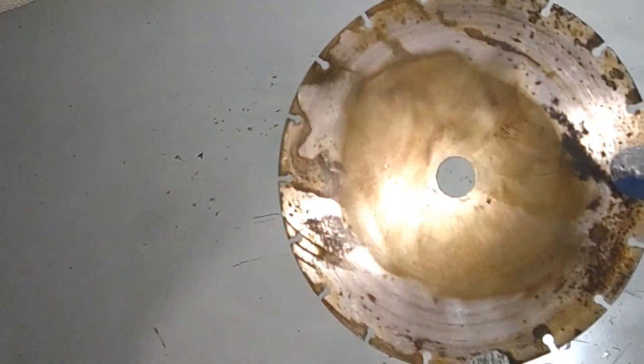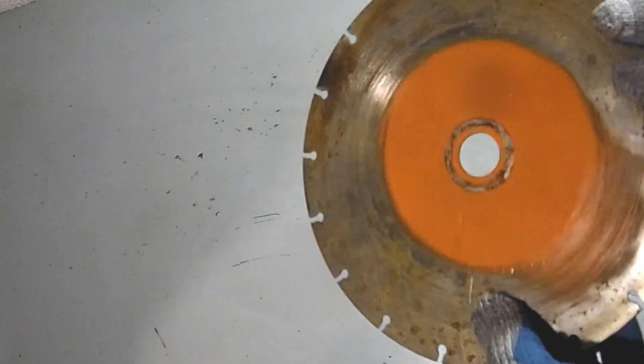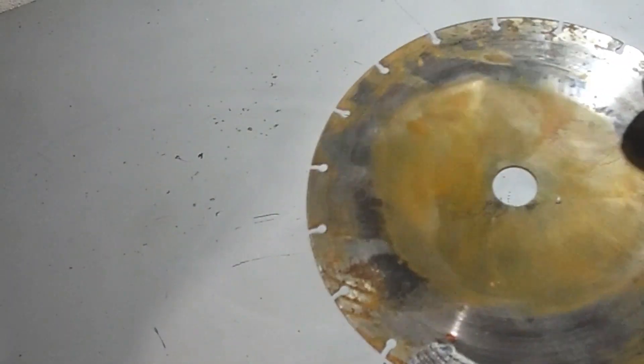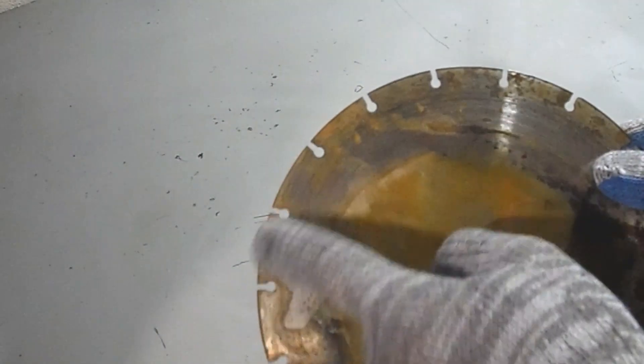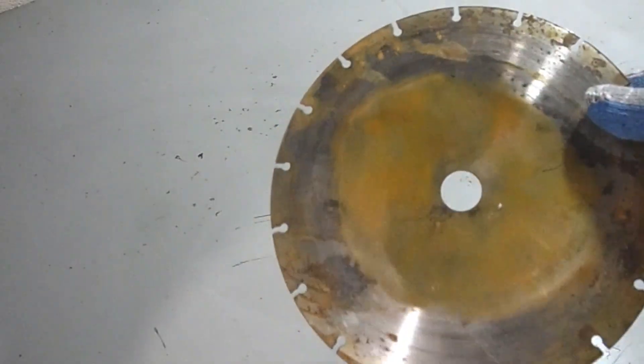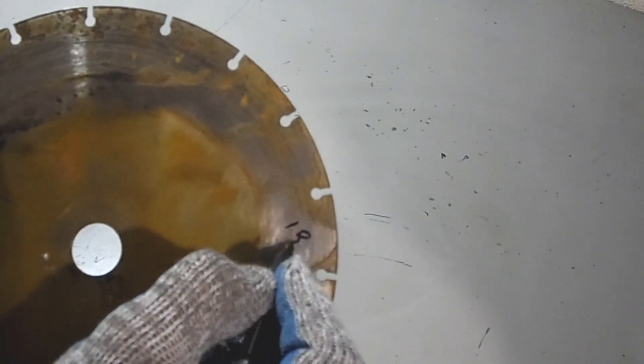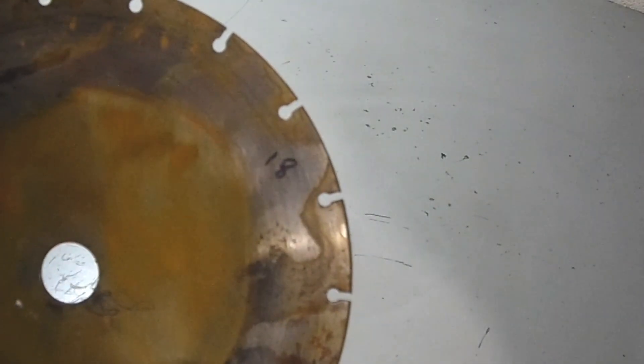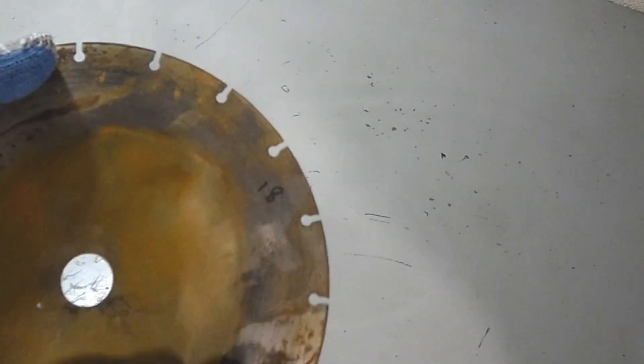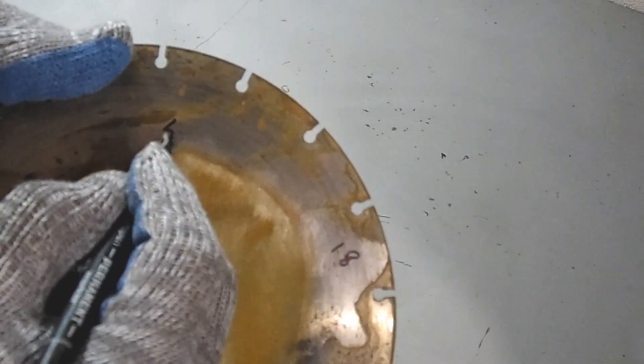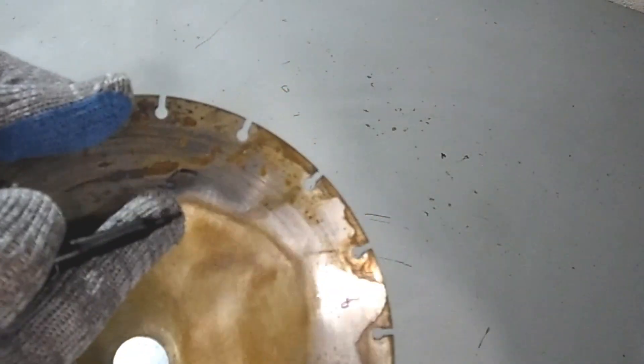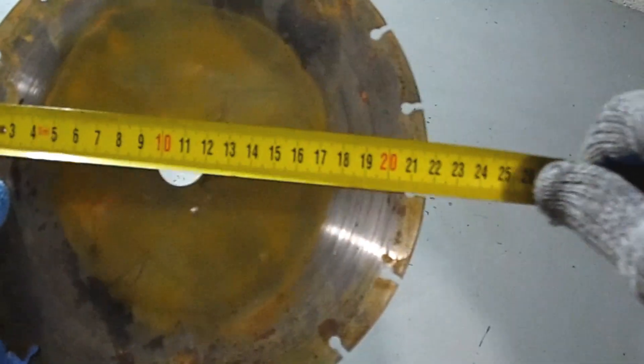To begin, I'll take a disc from an angle grinder for cutting tiles. This disc is quite worn out, it's no longer possible to cut tiles with it, so I'll use it. This disc has 18 segments. I'll divide this disc into 5 parts based on the number of working elements of my perpetual rotation machine. The disc diameter is currently 22 cm, since the disc is worn out.